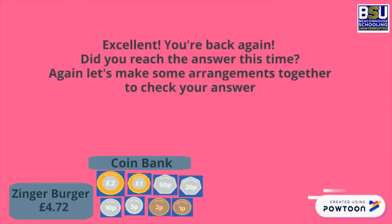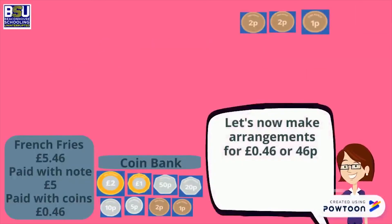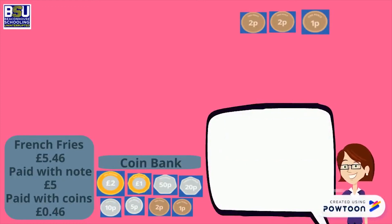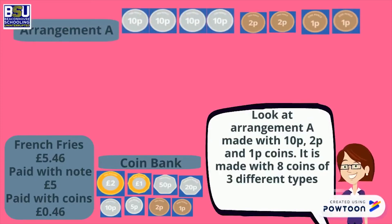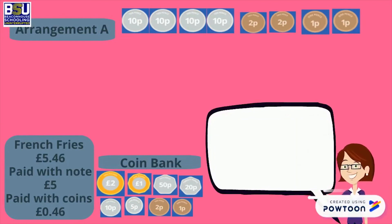Excellent, you are back again! Did you reach the answer this time? Let's make some arrangements together to check. We'll now make arrangements for 0.46 pounds, or 46 pence. Look at arrangement A, made with 10-pence, 2-pence, and 1-pence coins — it is made with 8 coins of three different types. But remember, the question asked for 5 coins of only two different types, so A is not the correct answer.